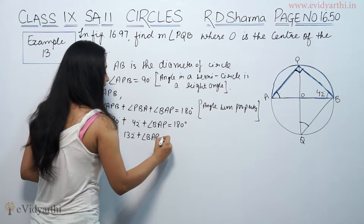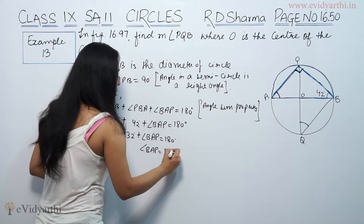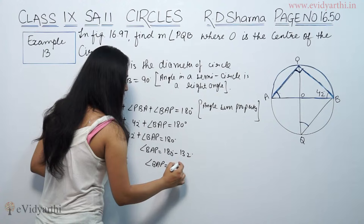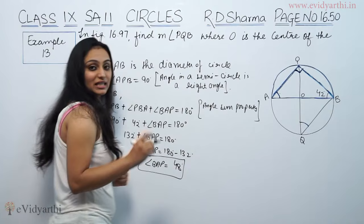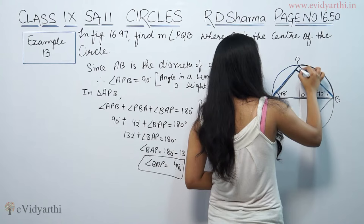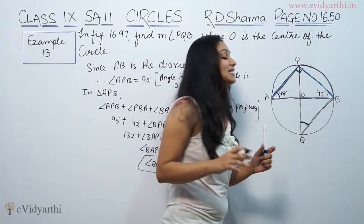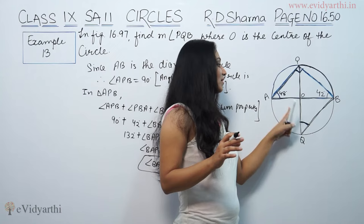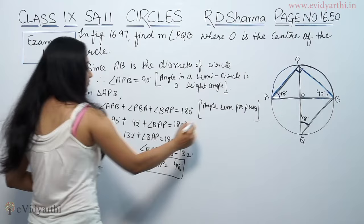So 132 degrees plus angle BAP equals 180 degrees. Therefore, angle BAP equals 180 degrees minus 132 degrees, which gives angle BAP equal to 48 degrees. So this angle BAP is 48 degrees.